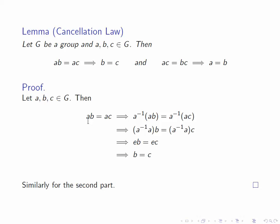Well, this is straightforward. We just write AB equals AC, multiply both sides by the inverse of A, use associativity to write that as A inverse A times B equals A inverse A times C, and cancel that down to EB equals EC or B equals C. So that shows us that we have left cancellation, and a similar argument gives us right cancellation.